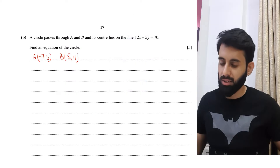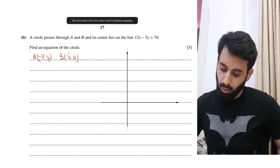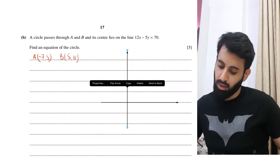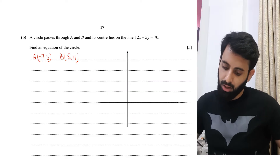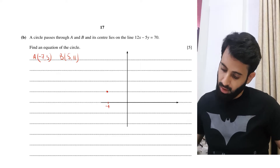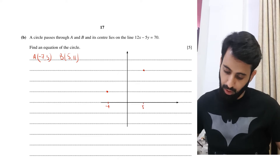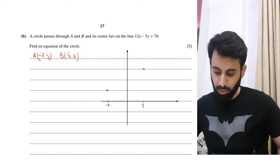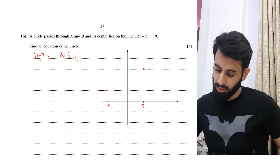Rather than just memorizing what to do, let's visualize it. We have a circle passing through A(-7, 3) and B(5, 11), so those two points lie on the circle. The center lies on the line 12x - 5y = 70.